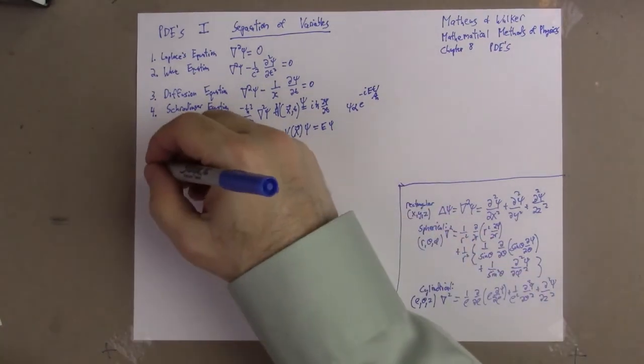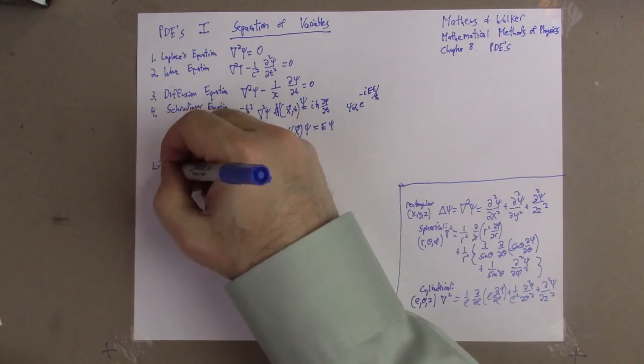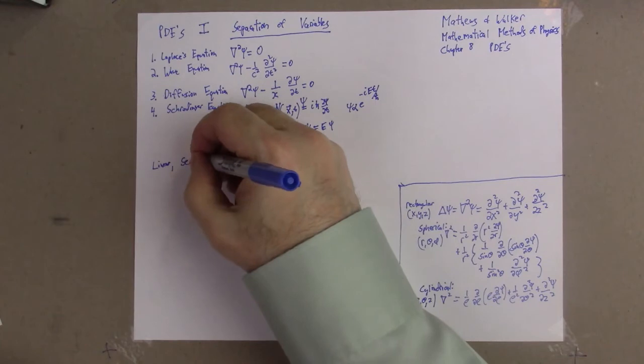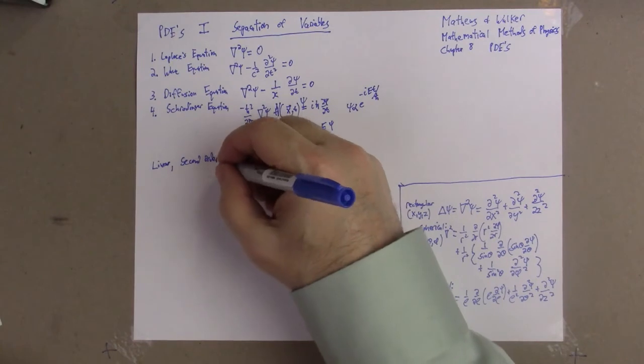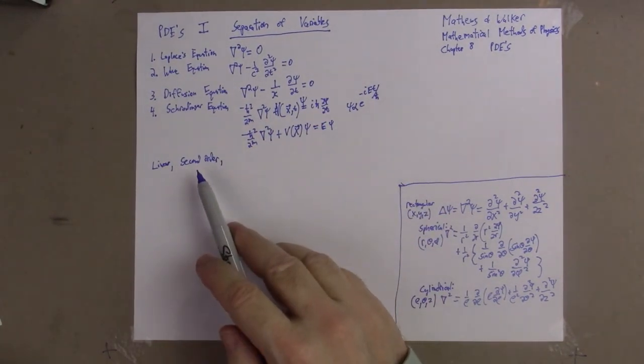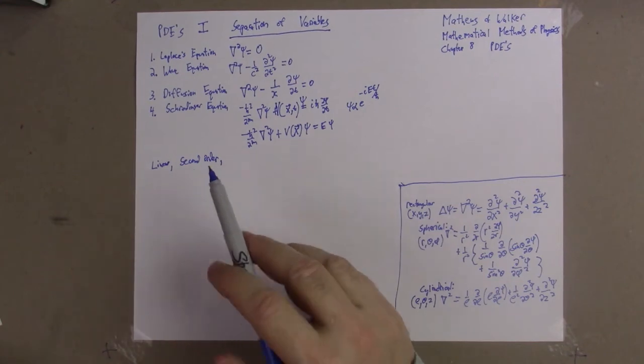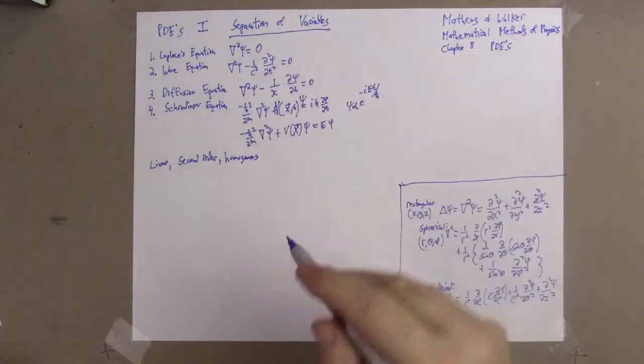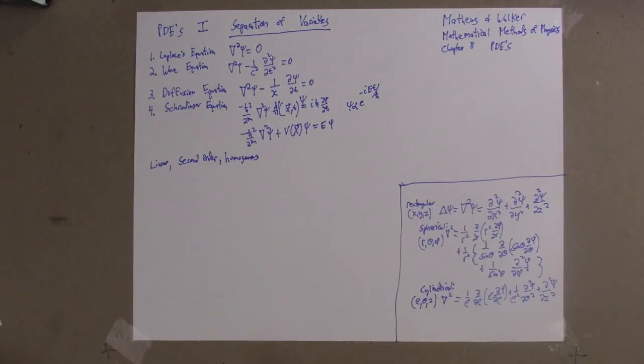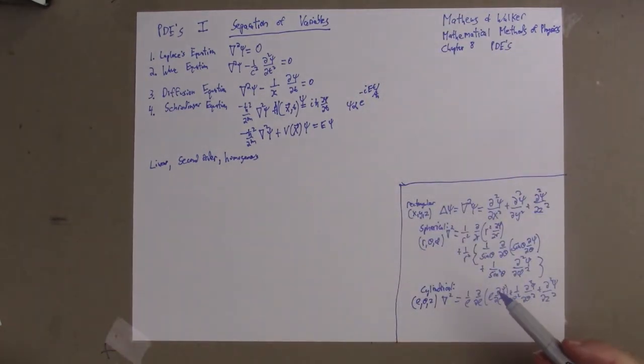All these equations have nice properties: they're linear, second order—almost all equations in physics are linear. Einstein's relativity equation is an exception, Navier-Stokes another exception. Second order—almost all equations in physics are second order. I guess the beam equation is fourth order; that's an outlier. We've written them down as homogeneous; we don't have any source terms here. At some point in time I'll get to Green's functions and we'll treat source terms. Right now we're only doing separation of variables. There are other more powerful techniques: transform methods, Wiener-Hopf methods, and Green's functions.